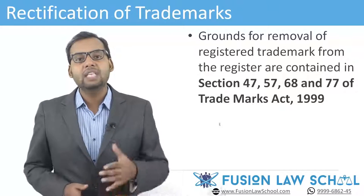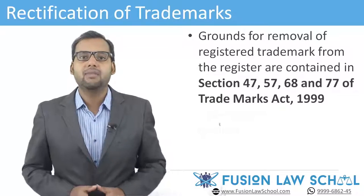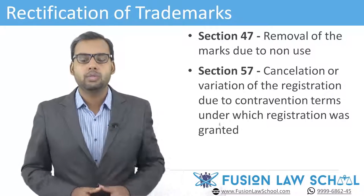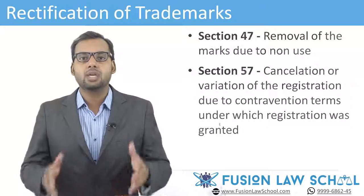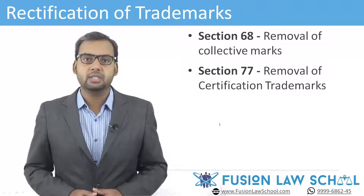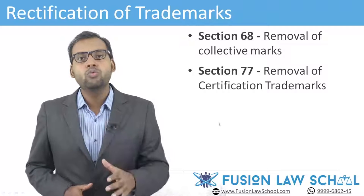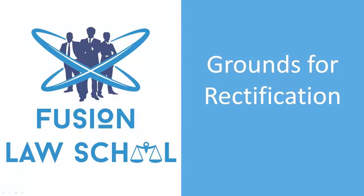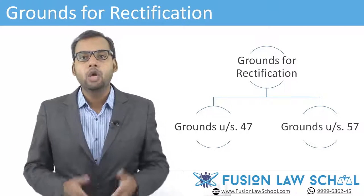These grounds are contained in sections 47, 57, 68, and 77 of the Act. Section 47 relates to removal of the mark due to non-use. Section 57 relates to cancellation or variation of registration due to contravention of terms under which registration was granted. Section 68 relates to removal of collective marks, and section 77 relates to removal of certification trademarks. Sections 68 and 77 are rarely used in practice, so we will confine our discussion to section 47 and section 57 of the Trademarks Act.